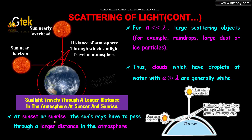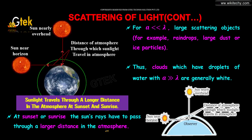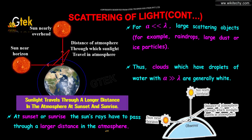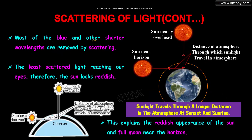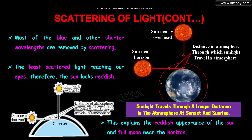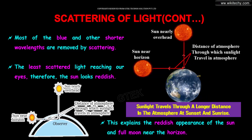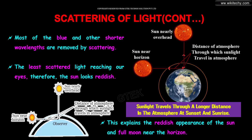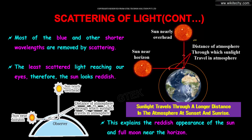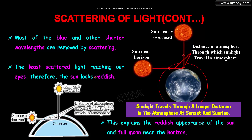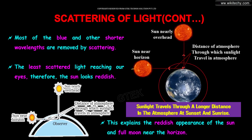At sunset or sunrise, the sun rays have to pass through a very large distance in the atmosphere. Most of the blue and other shorter wavelengths are removed by scattering. The least scattered light reaches our eyes, and therefore the sun looks reddish. This concept explains the reddish appearance of the sun and full moon near the horizon.